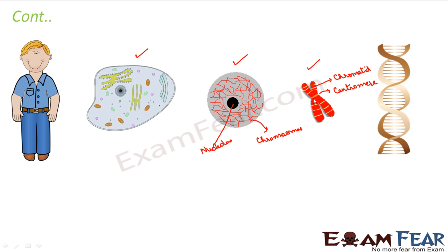If you look at a chromatid more closely, you can see some yellow-colored structures — these are nothing but genes. If you look at a gene closely, you will see that it is made up of DNA, and DNA is the blueprint of the body. DNA actually decides how the body is going to be.